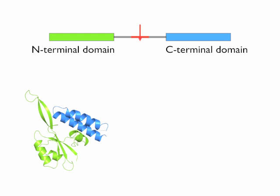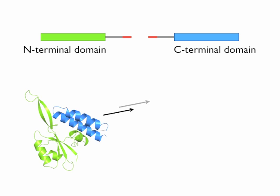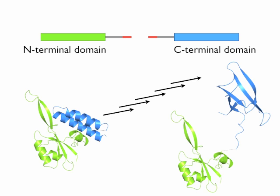Upon addition of TEV-protease, signals of the C-terminal domain in the beta barrel conformation gradually appeared, while the signals of the C-terminal domain in the alpha-helical form disappeared. This clearly demonstrates that the C-terminal domain refolds spontaneously when released from the N-terminal domain. During RFAH recruitment to the transcription complex, the domains have to be separated to expose the RNA polymerase binding site. Hence, we suggest that refolding occurs during transcription.